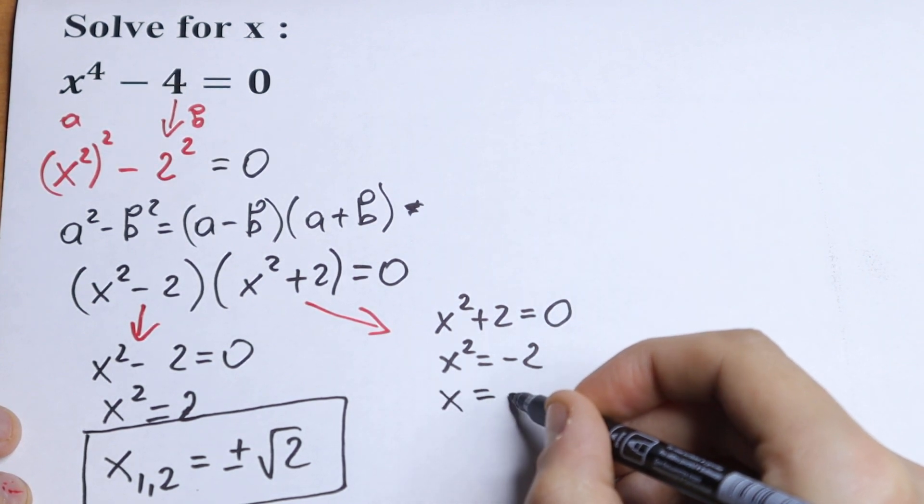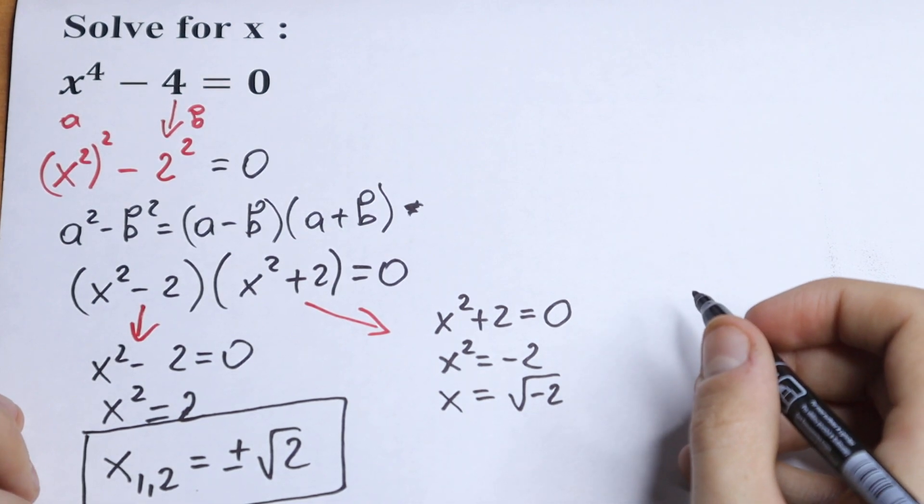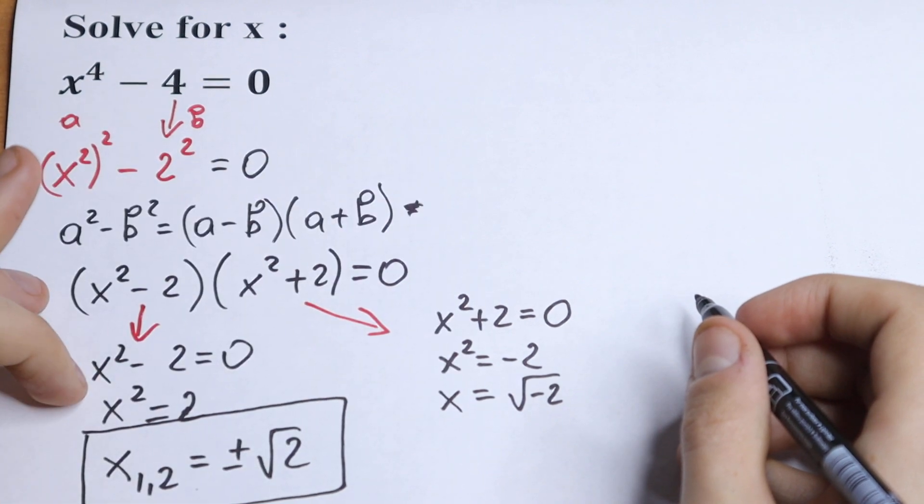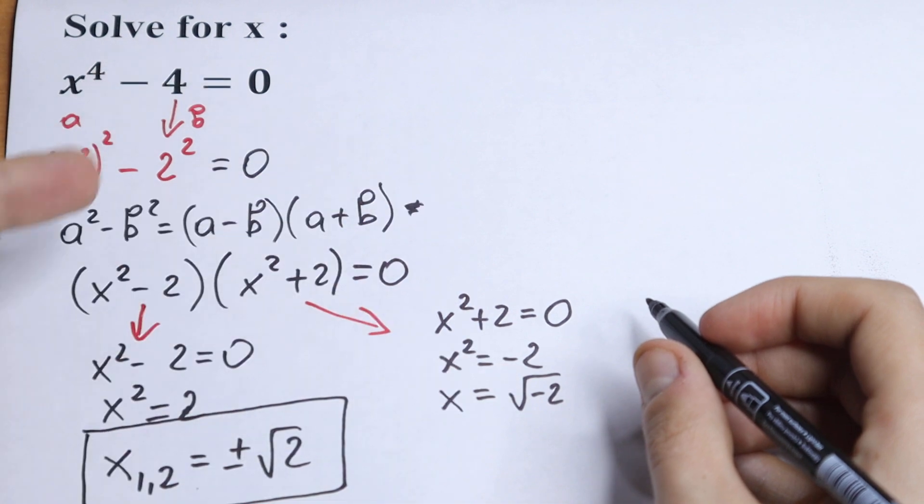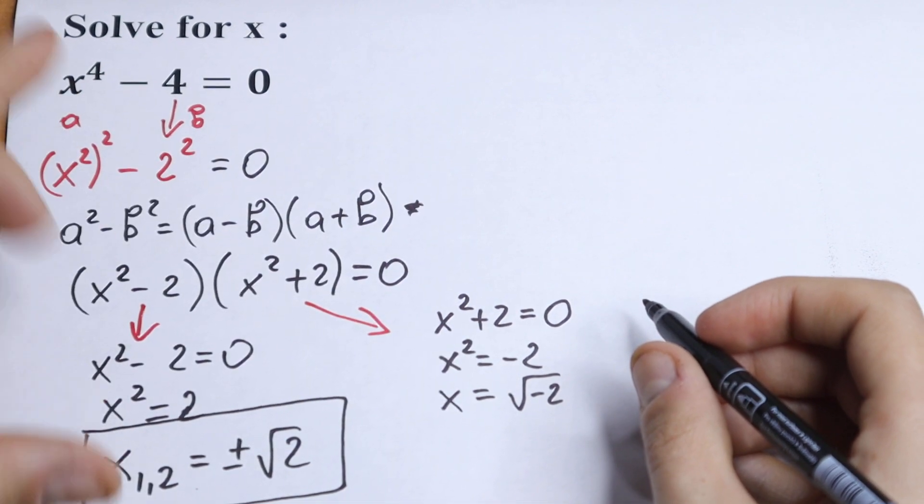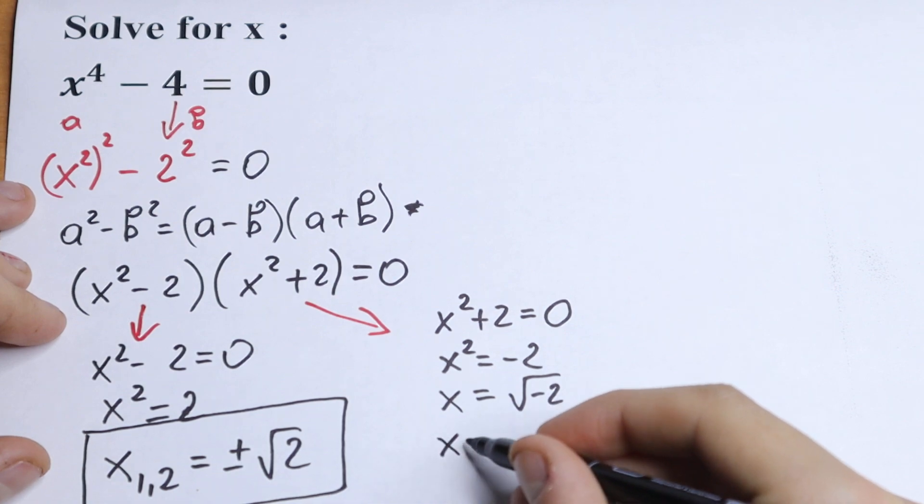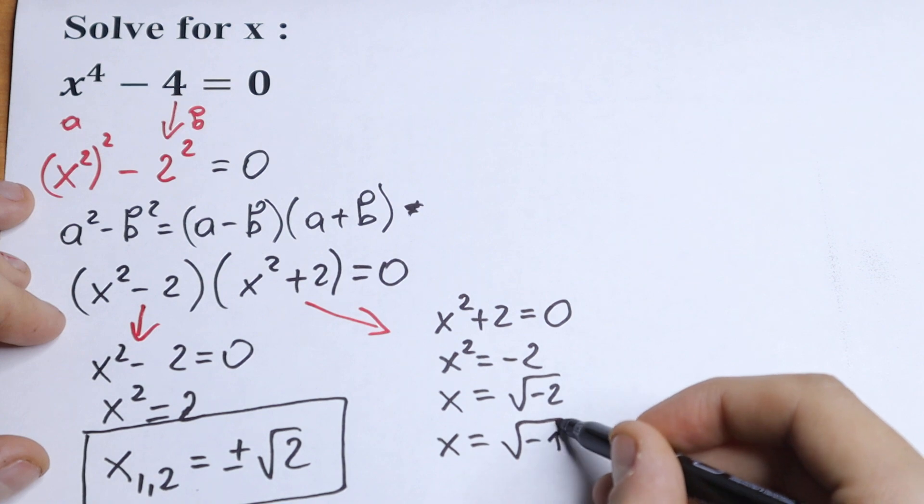So we will have x equal to square root of minus 2. Simplifying this, right here we work in complex numbers. Right here this is real number roots. So this logic doesn't work in real number theory. So we will have x equal to, I write this minus as square root of minus 1 times 2.